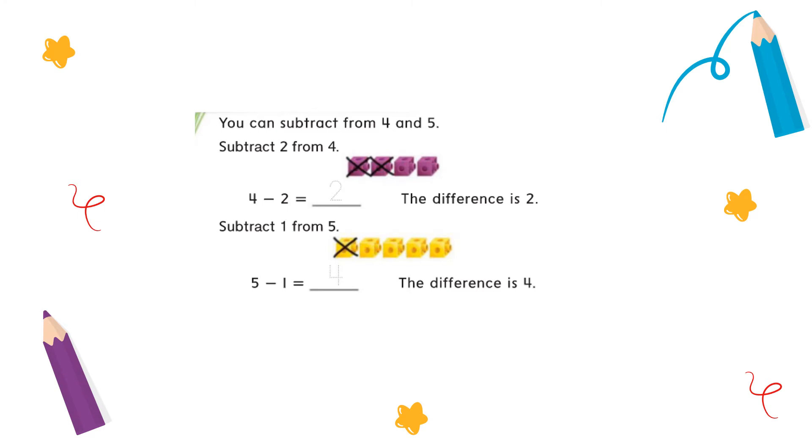So here we need to subtract 1 from 5. So the big number minus the small number. I have 5 yellow cubes and we crossed out 1. So that means 5 minus 1 equals 4. So the difference is 4.